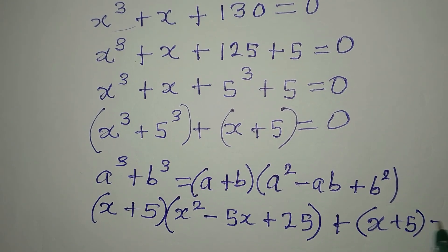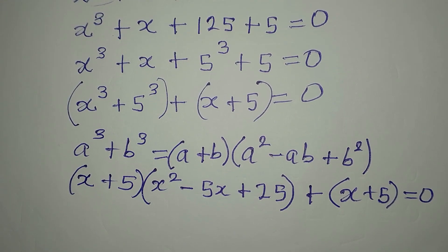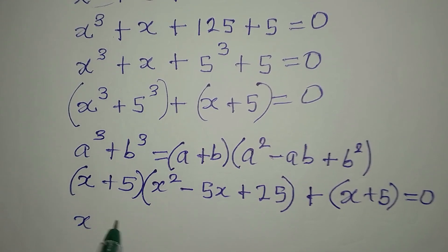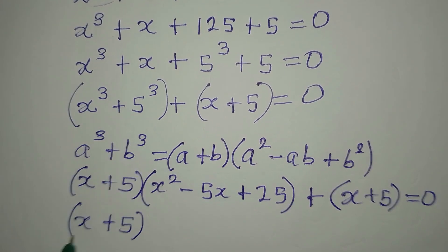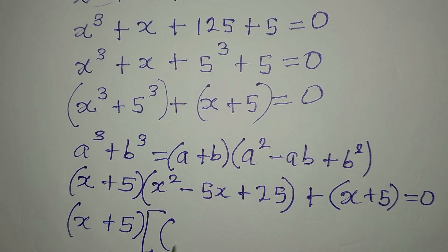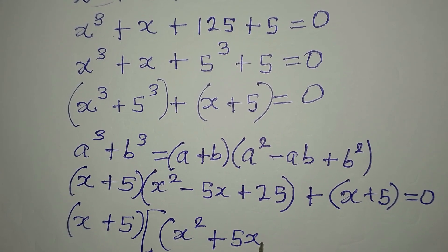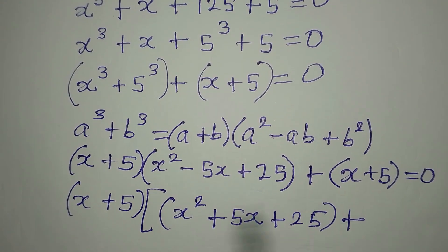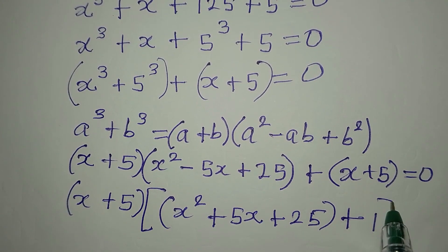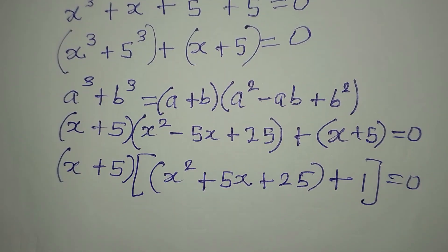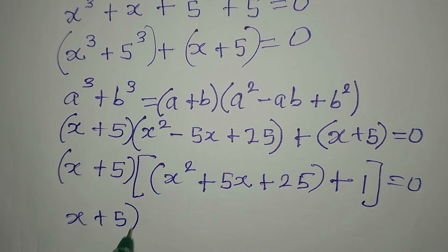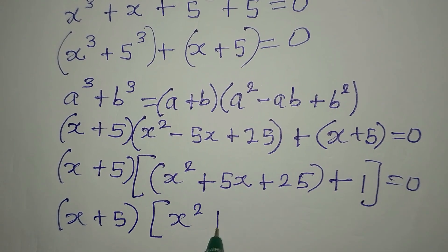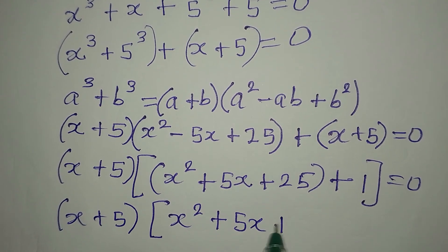Then plus — I already have x plus 5 in that bracket — and everything is equal to zero. Now if you look at this, x plus 5 is common, so we will factorize x plus 5 out. Here we have x squared plus 5x plus 25, then plus this divided by itself will give 1. So that would be x squared plus 5x plus 26, and we equate to zero.